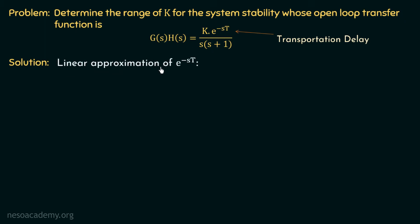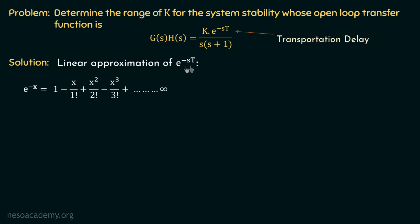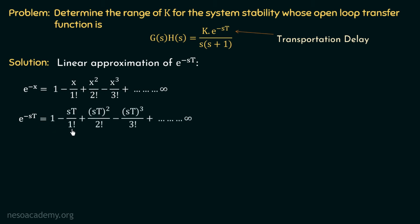We will now perform the linear approximation of the term e power minus st, and for this we will use the expansion of e power minus x. The Taylor series expansion of e power minus x is 1 minus x over 1 factorial plus x squared over 2 factorial minus x cube over 3 factorial, and so on up to infinity. We will use this expansion for the linear approximation of e power minus st by substituting st in place of x. So the expansion of e power minus st will be 1 minus st over 1 factorial plus (st)² over 2 factorial minus (st)³ over 3 factorial, and so on.